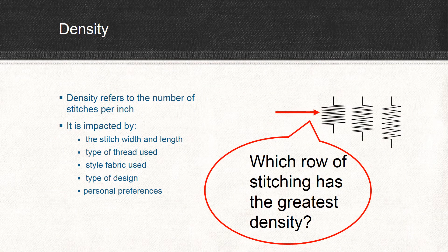Density refers to the number of stitches per inch, and it can be impacted by the stitch width, the stitch length, the type of thread you use, even the type of fabric or the type of design — and also by your own personal preference. Take a look at the picture to the right. You can see three rows of stitching — they're all similar, a sort of zigzag design. The row on the left has the greatest density; the stitches are tightly stitched together, while the one on the far right has a lot more space between stitches. You want a nice balance: if your fabric shows through the back, that's a sign there's not enough density in your design.